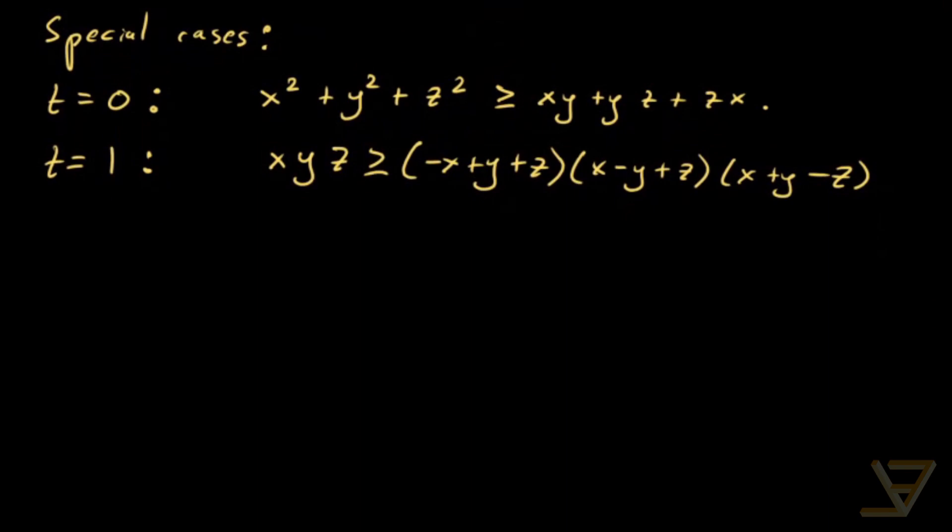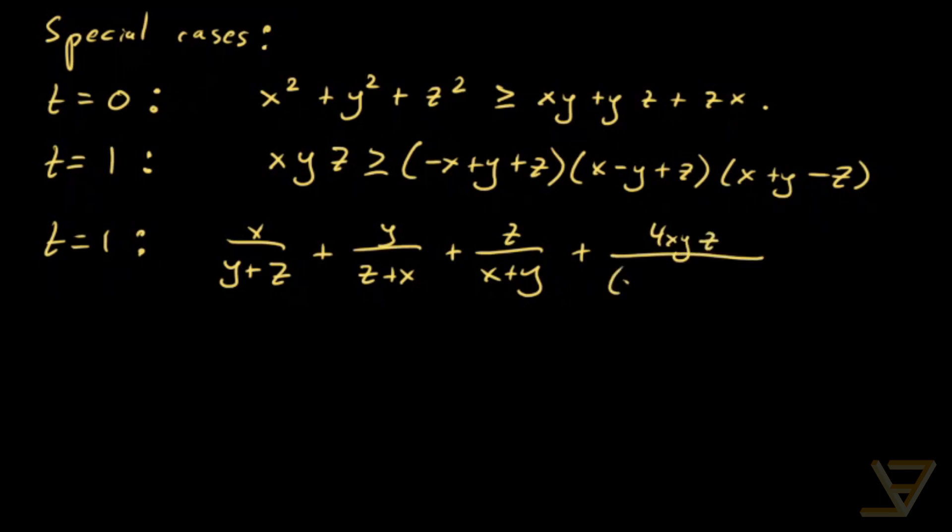For t equals one, we can also write it as x/(y+z) + y/(z+x) + z/(x+y) + 4xyz/[(x+y)(y+z)(z+x)] ≥ 2. And if you've seen Nesbitt's inequality, this is stronger. Stronger than Nesbitt.